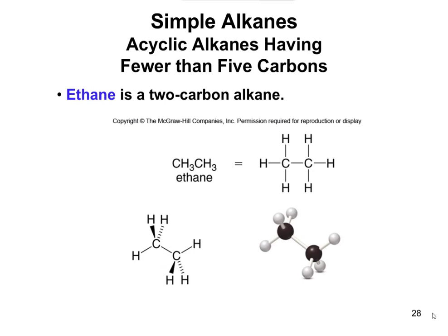Ethane is a two-carbon alkane. Over here, this is going to be the complete structure. This one you would refer to as the condensed structure — condensed is when you take the lines out. That would be ethane in both a complete and condensed structure, and you can see the other representations below.